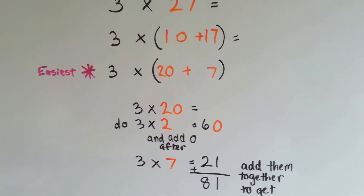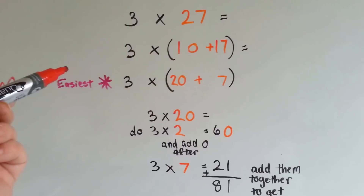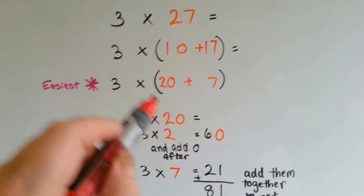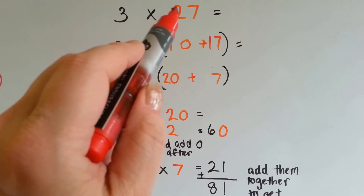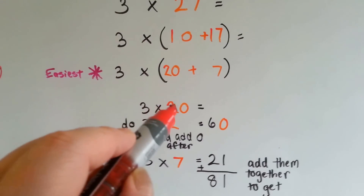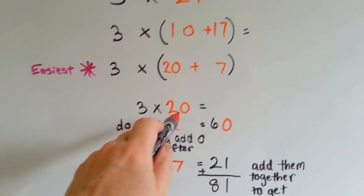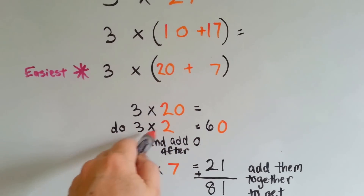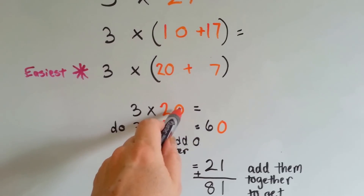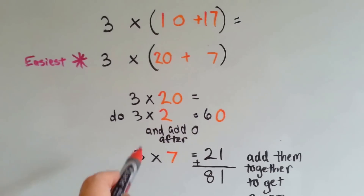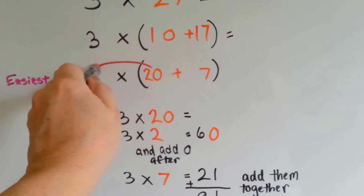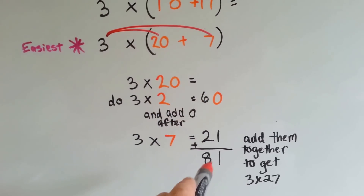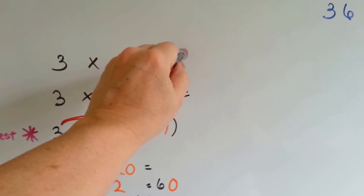So if you need to do a big multiplication problem, you pick the ones that are the easiest. Look at 3 times 27. You can't do that in your head really fast right away. How can we break up 27? We could do 10 plus 17, but that's not as easy as 20 plus 7, which is 27. Because we can do 3 times 20 — you can take the 0 away and do 3 times 2 and add the 0 back on when you're done. So 3 times 2 is 6, and then we add the 0 back to the answer, so now we got 60. Then we do the 3 times 7, which is 21, and we add the 60 and the 21 to get 81. So 3 times 27 is 81.